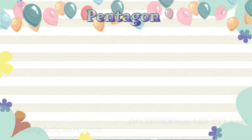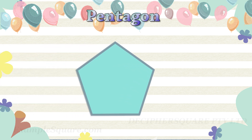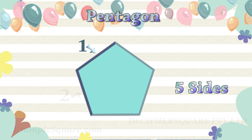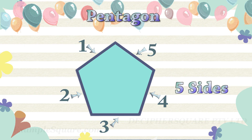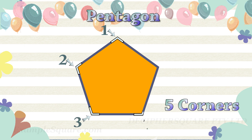A pentagon shape is a shape with five sides and five corners. This is a pentagon — it has five sides: one, two, three, four, five. And it has five corners: one, two, three, four, five.